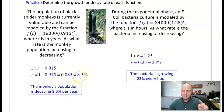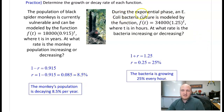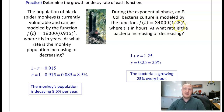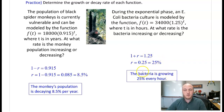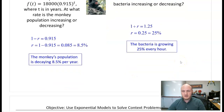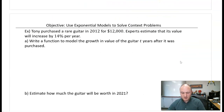For the next one: during the exponential phase, an E. coli bacteria culture is modeled by f of t equals 34,000 times 1.25. That E. coli is definitely growing — the base 1.25 is greater than one, so it's exponential growth. Set one plus r equal to 1.25, solve, and you get 25%. The bacteria is growing 25% per hour.